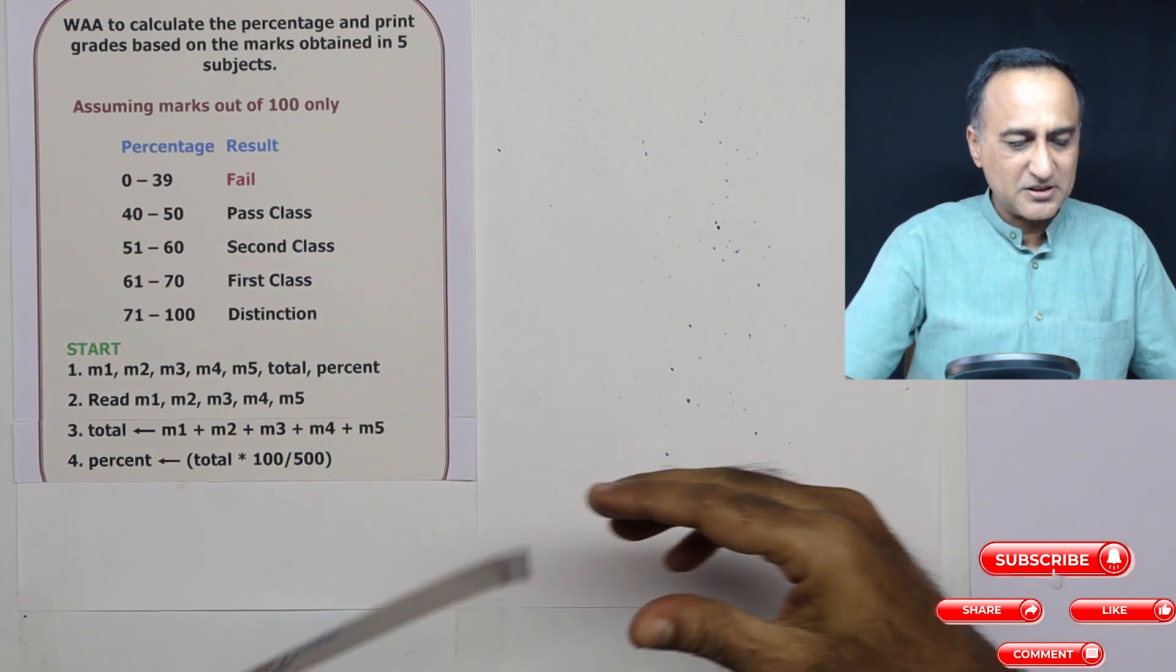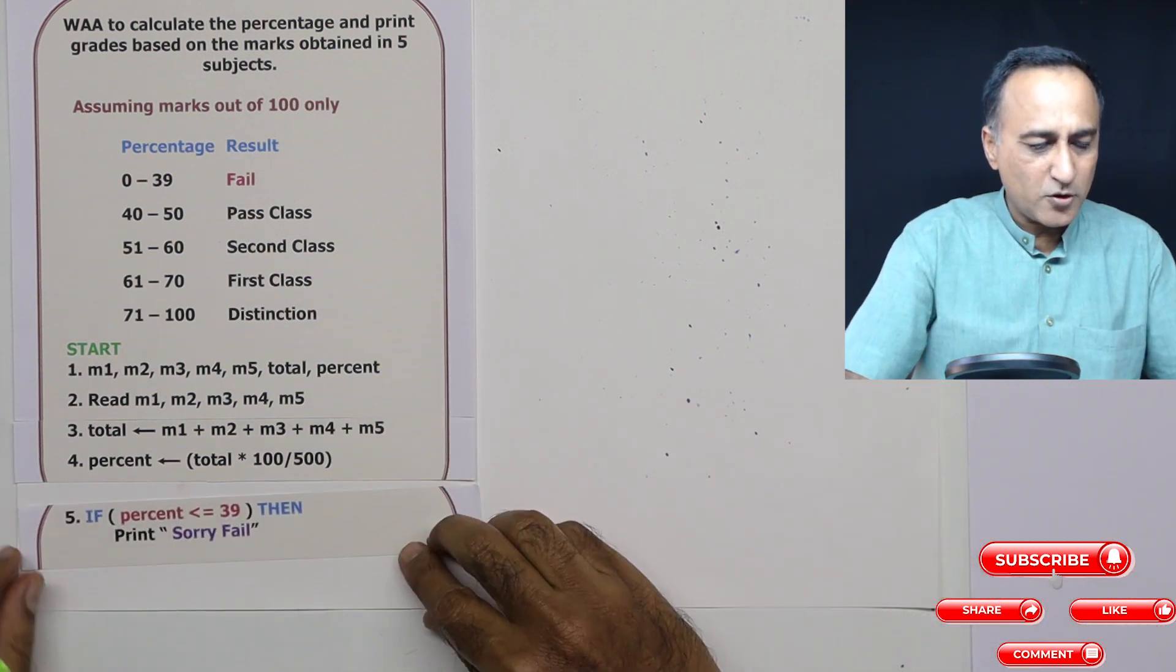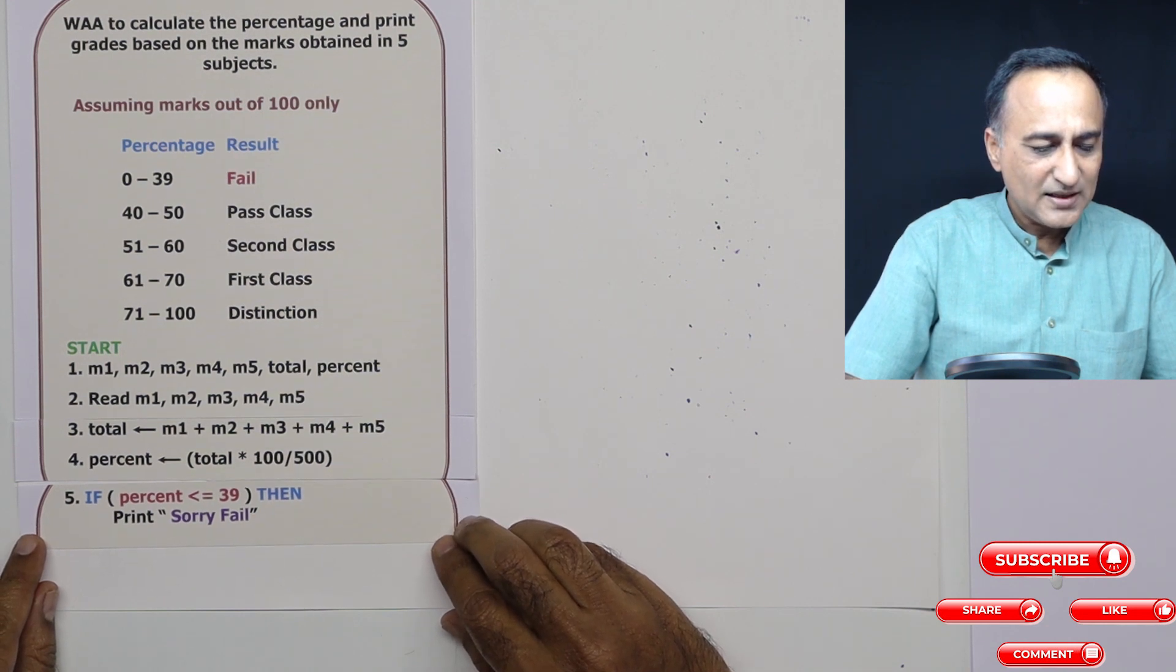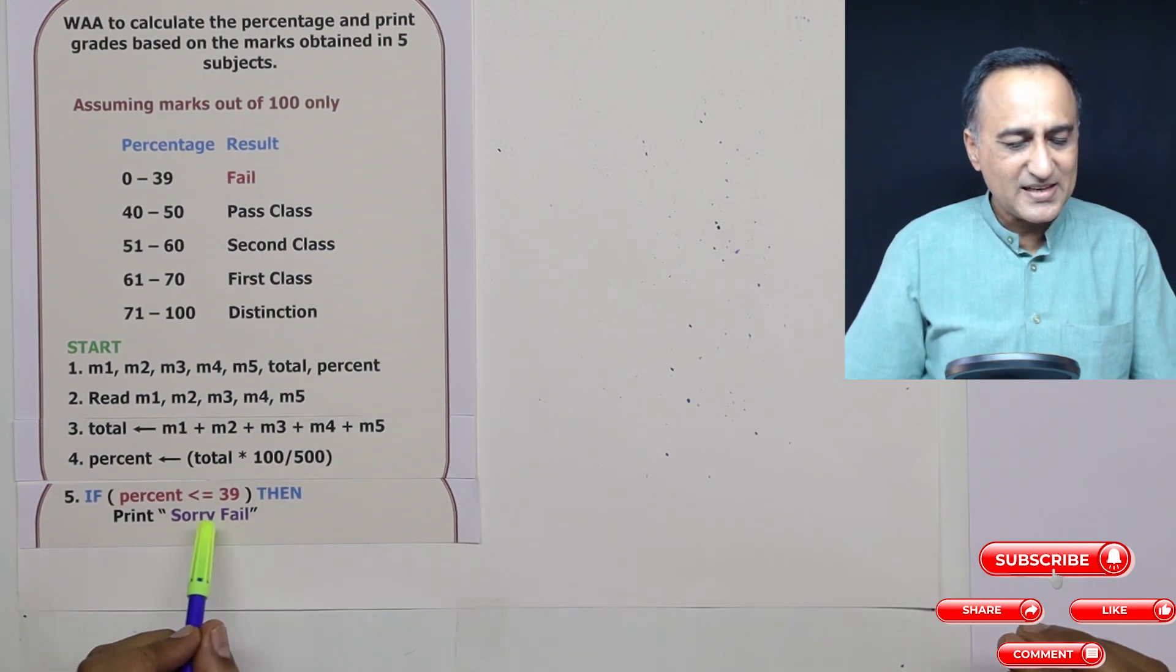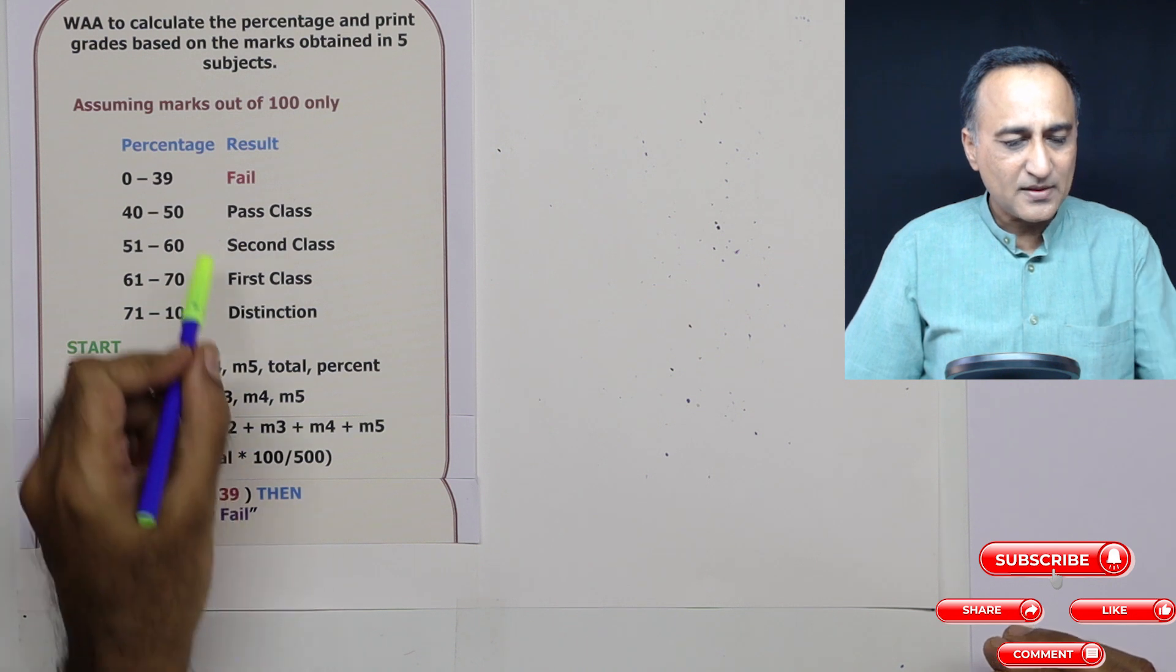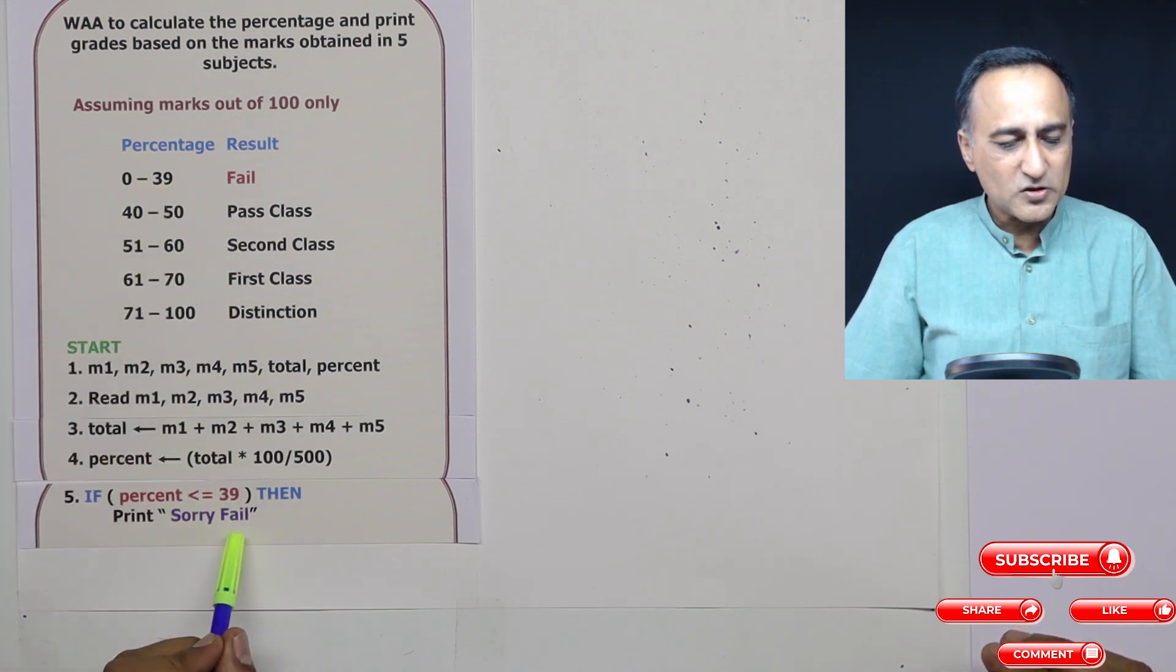Once you calculate the percentage, then what you're going to do next is you're going to ask the question: is the percent less than or equal to 39? In this case, you will print sorry, fail.